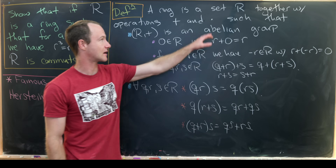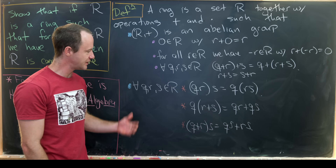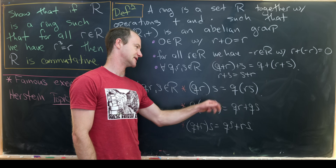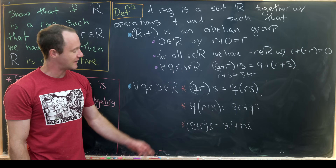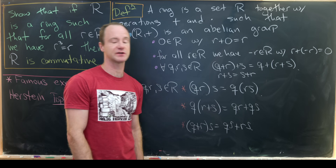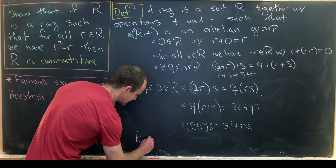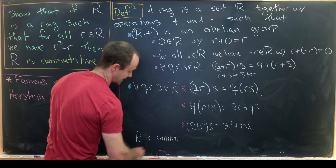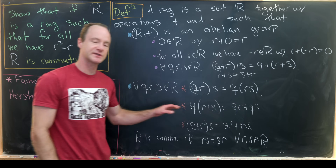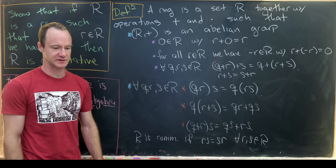That takes care of our addition operation. For multiplication, we have associativity: q times (r times s) equals (q times r) times s. And we have two distributive rules: q times (r + s) equals qr + qs, and a right-hand distributive rule as well. We say R is commutative if RS equals SR for all R and S in R — commutativity refers to multiplication, not addition, since addition is always commutative.